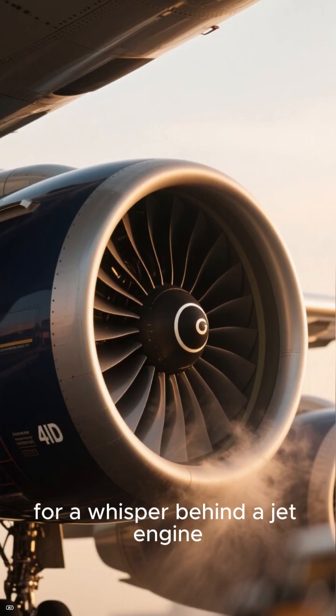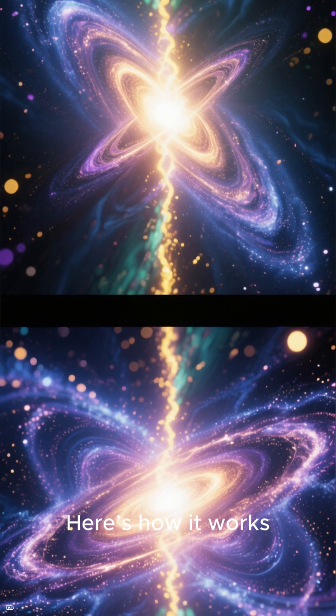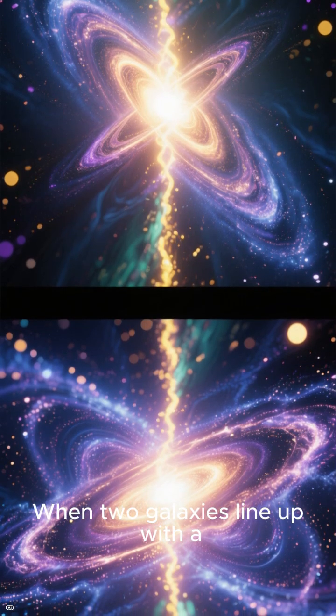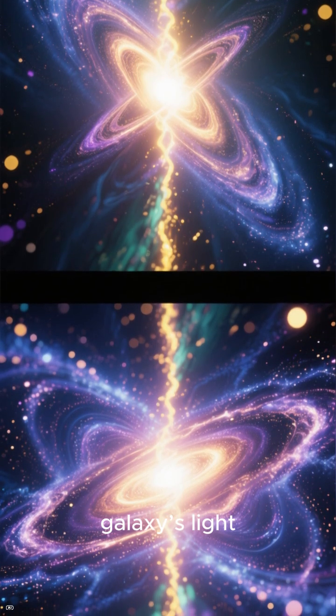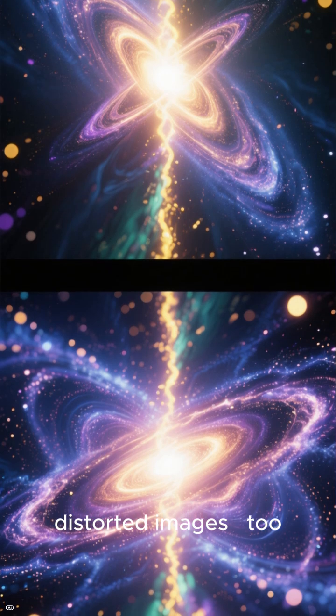Think of it like searching for a whisper behind a jet engine. Here's how it works. When two galaxies line up with a quasar in front, gravity bends the background galaxy's light, producing multiple distorted images.